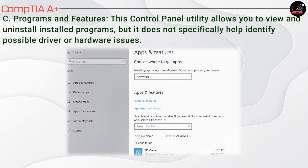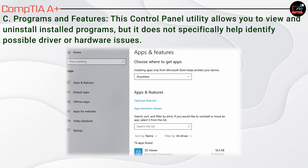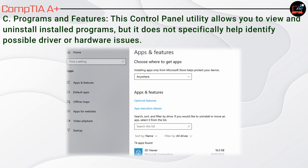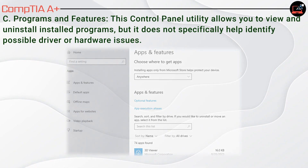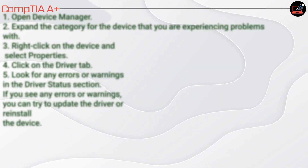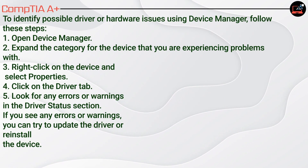C. Programs and Features — this Control Panel utility allows you to view and uninstall installed programs, but it does not specifically help identify possible driver or hardware issues.